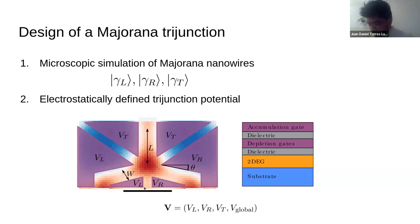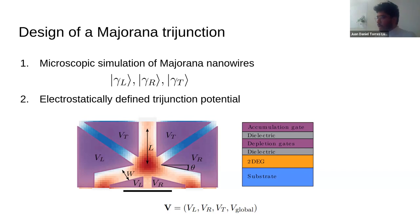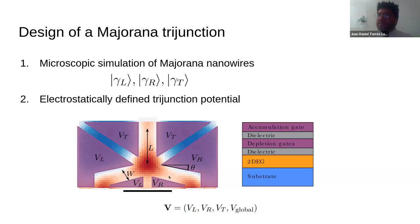Now that we have the trijunction roughly functioning, it is not clear if this device will work beforehand. If the middle region is too small, all the Majoranas will be lightly coupled at all times, making it very difficult to decouple them. On the other hand, if the device is too large, it will be very difficult to induce a single coupling. We face this challenge of not knowing if the device will work, but we have four gate voltage parameters that we can use to find whether it works.